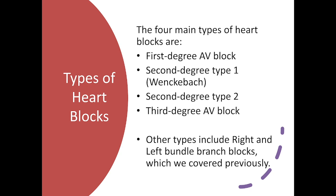These are the four main types of heart blocks that we need to know, at least at the ALS level. The four main types are a first-degree AV block, a second-degree type 1 block also known as a Wenckebach, a second-degree type 2 heart block, and a third-degree AV heart block. There are technically other blocks with escape rhythms, such as a right bundle branch block or left bundle branch block, but we're going to focus more on AV blocks.